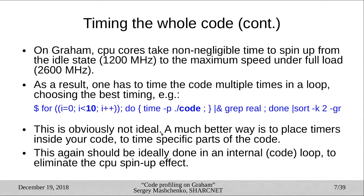There is a caveat: CPU cores on the GRAM cluster, like most modern CPUs, have a default slow idle state — for GRAM that's 1200 MHz. It takes non-negligible time to spin up to full speed of 2600 MHz once you apply a load. This will affect accuracy of profiling measurements, especially for short runs of 5–10 seconds. To avoid this issue, the best way to profile short codes is to run them in fast succession in a loop.